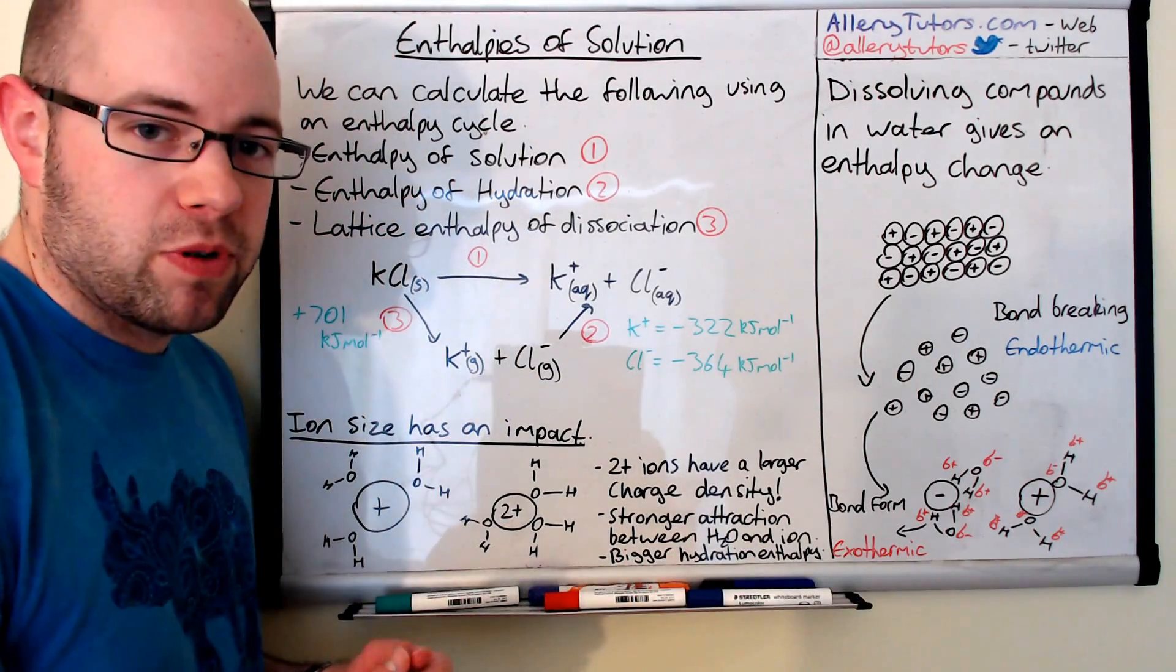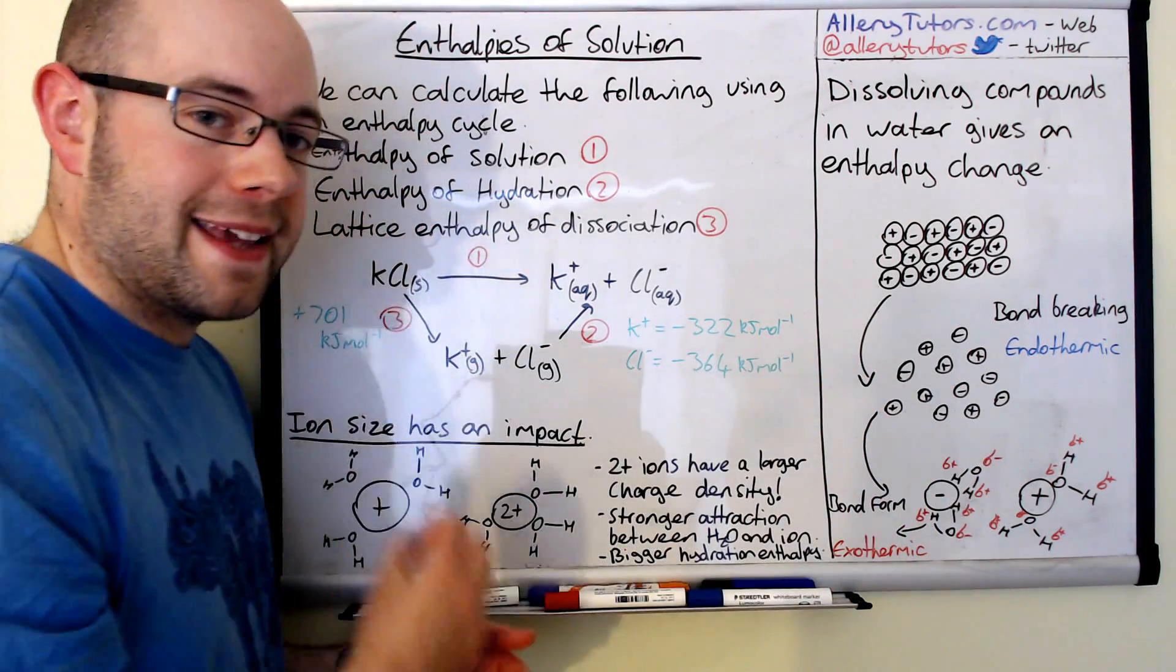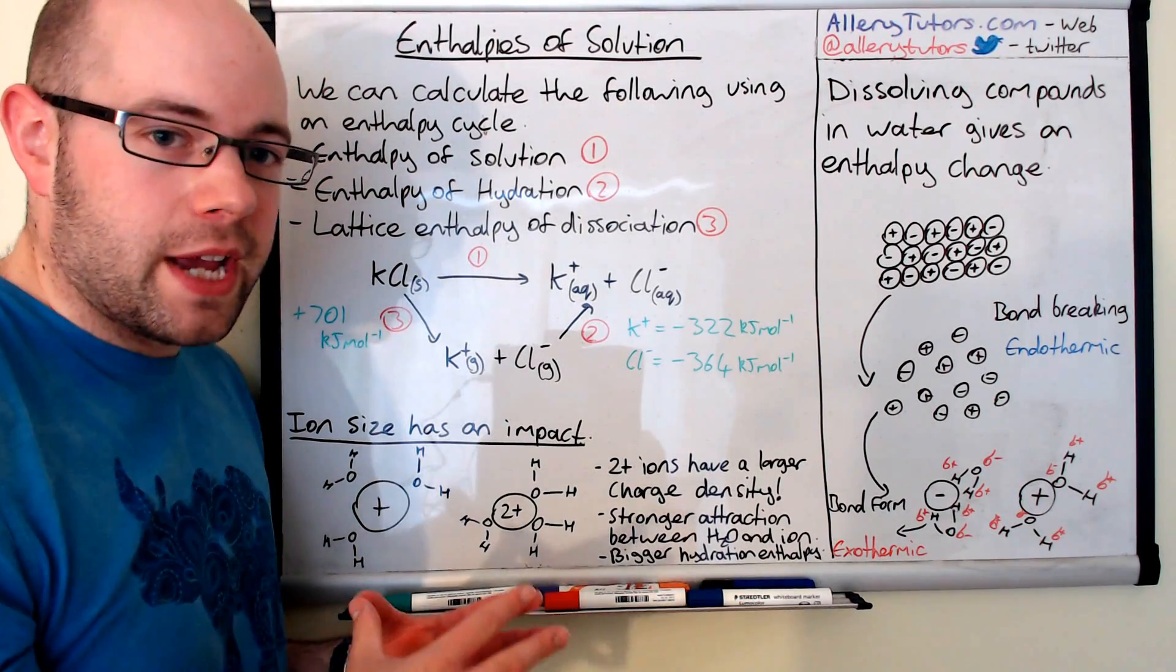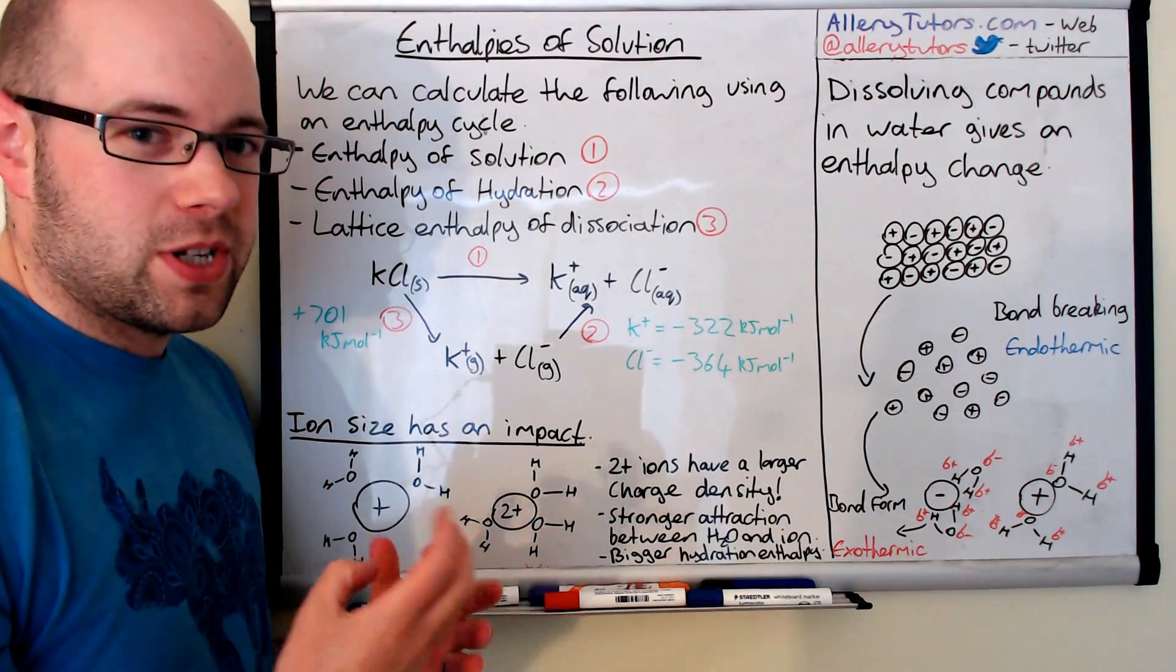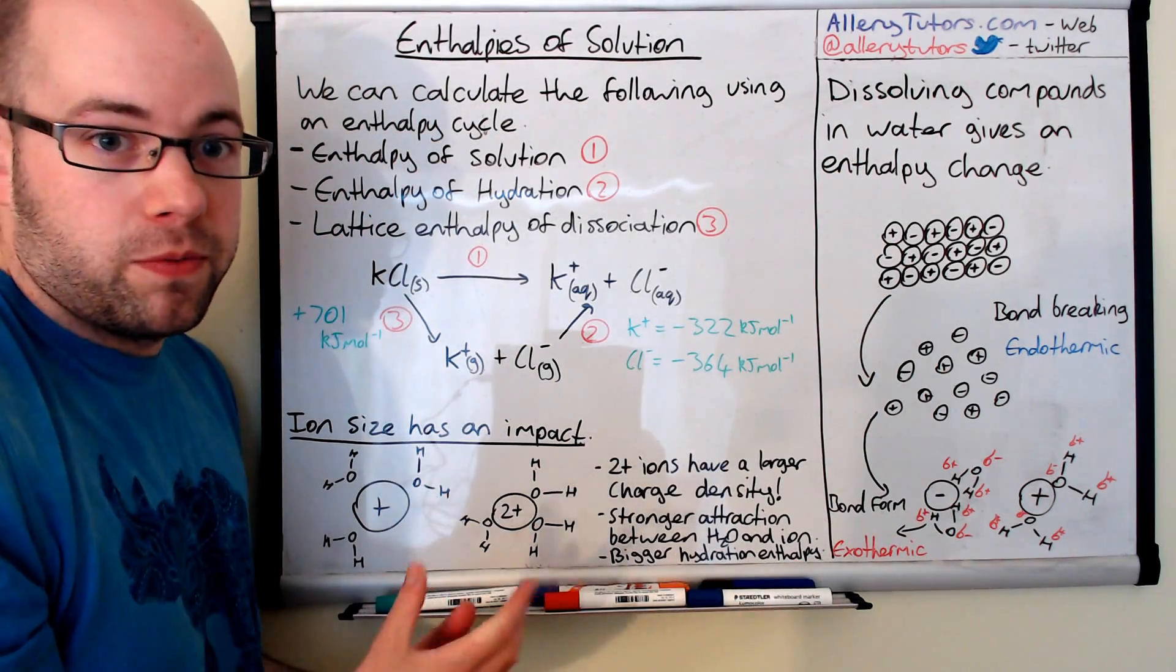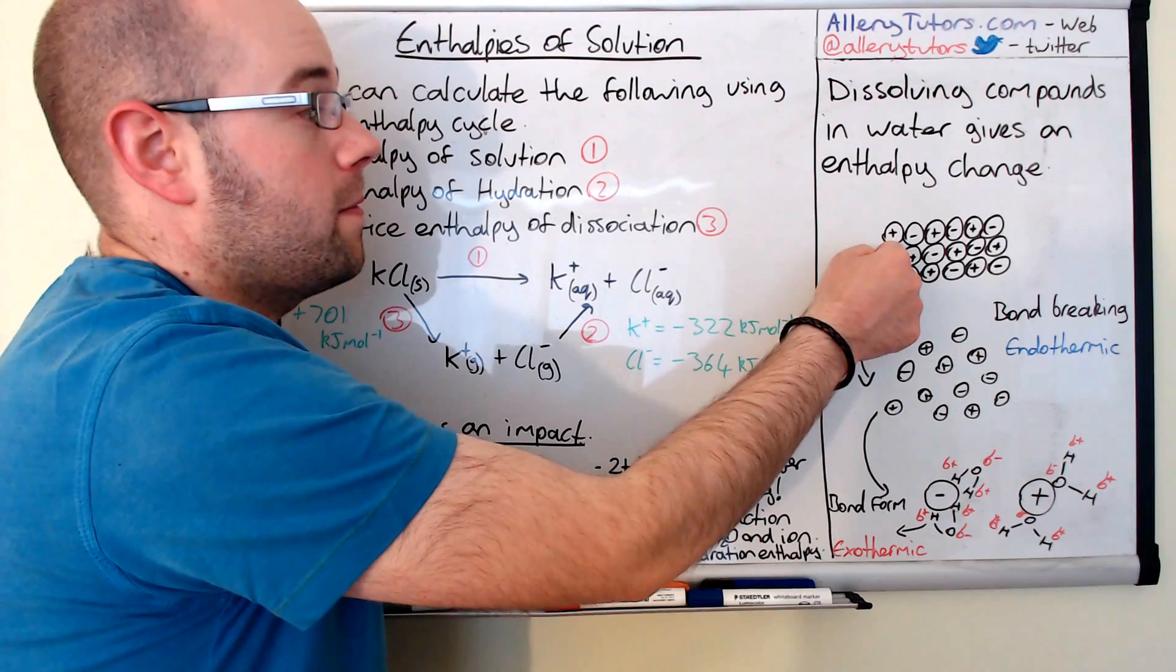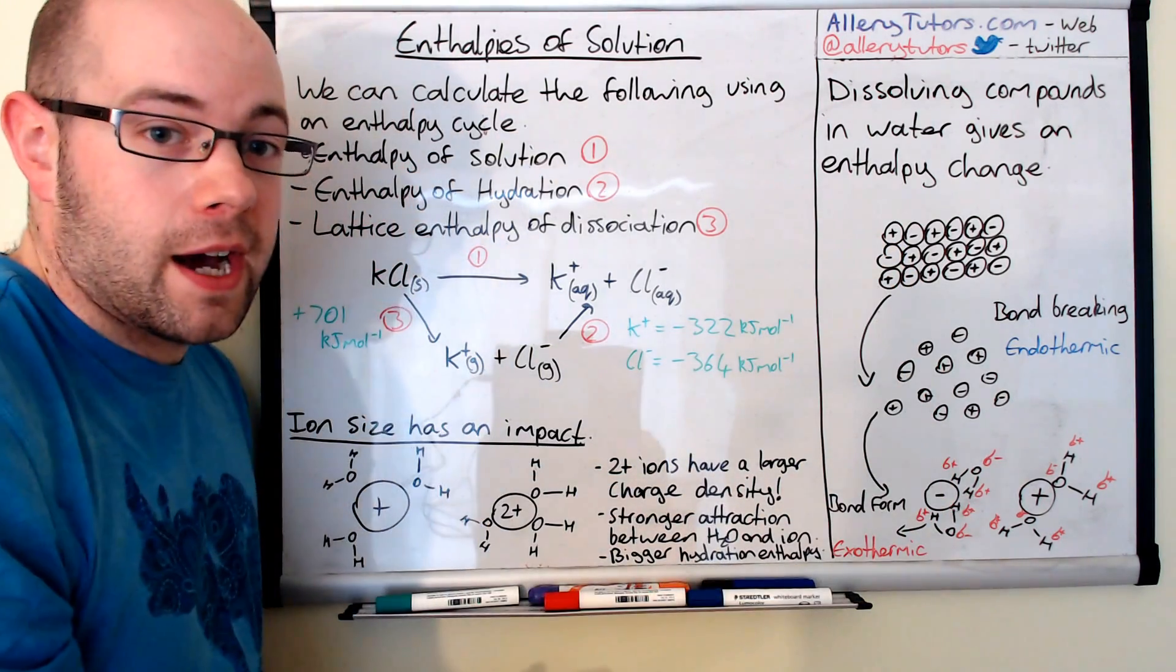And this attraction between the water molecules and the ions is actually exothermic. This is effectively the same as bond forming. So this is an exothermic process. This is called enthalpy of hydration. This is where we're taking ions in the gaseous state and we are attracting water molecules to the ions, and this forms aqueous ions.